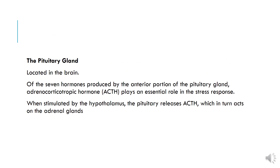The pituitary gland is connected to the hypothalamus, which is a structure in the forebrain. It is often referred to as the master gland because it produces a number of hormones that affect other glands, which then prompt the production of yet other hormones. Of the seven hormones produced by the anterior portion of the pituitary gland, adrenocorticotropic hormone, also known as ACTH, plays an essential role in the stress response. When stimulated by the hypothalamus, the pituitary gland releases ACTH, which in turn acts on the adrenal glands.